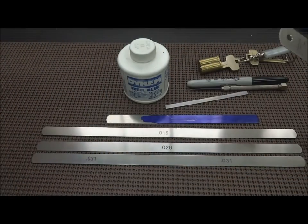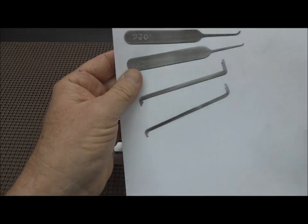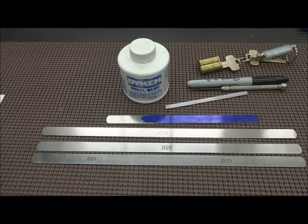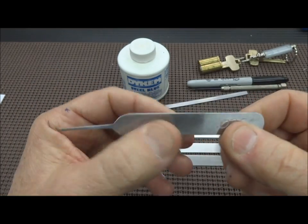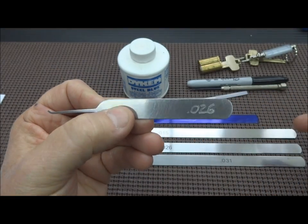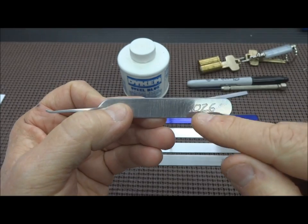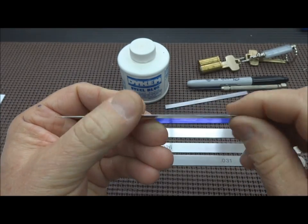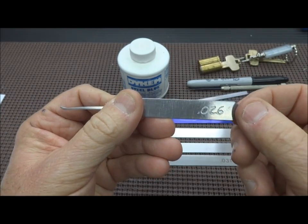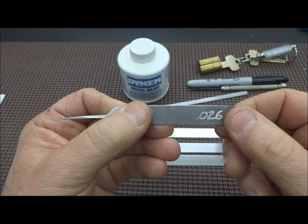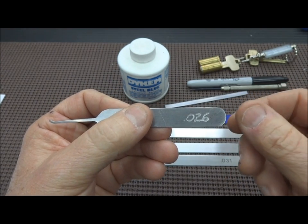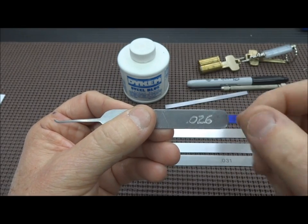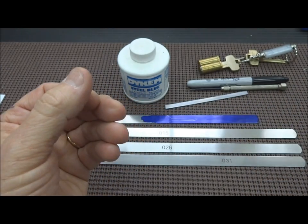One more thing: when I make a pick—I'm going to make three of them here, they're all going to be virtually identical—what I'll always do is engrave on both sides the width of the material that I make it out of. That way when I go into my pick set and I need a really thin one, I just look at the side and I know exactly what it is.